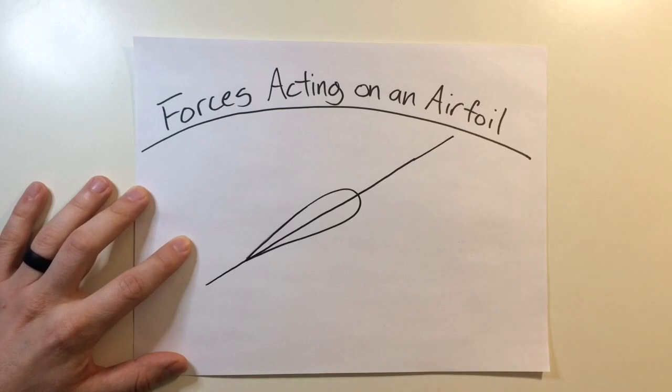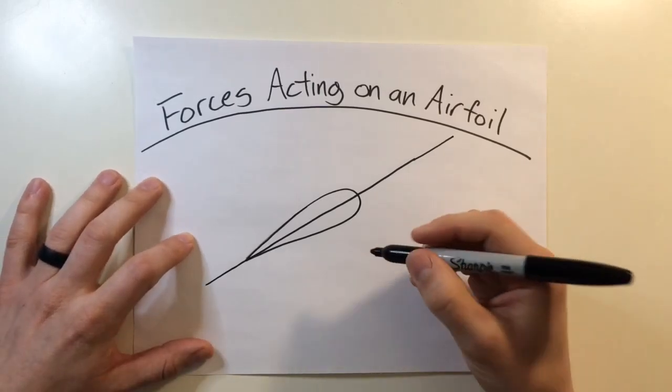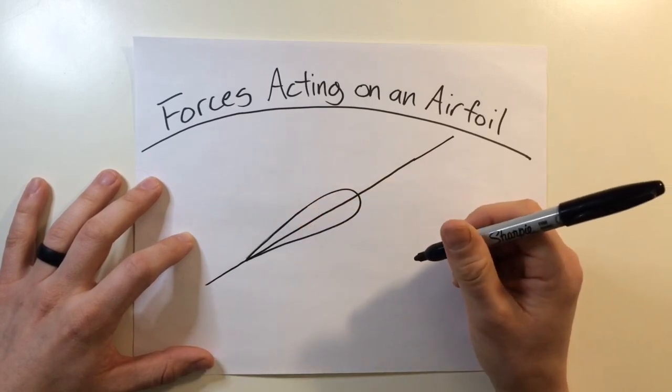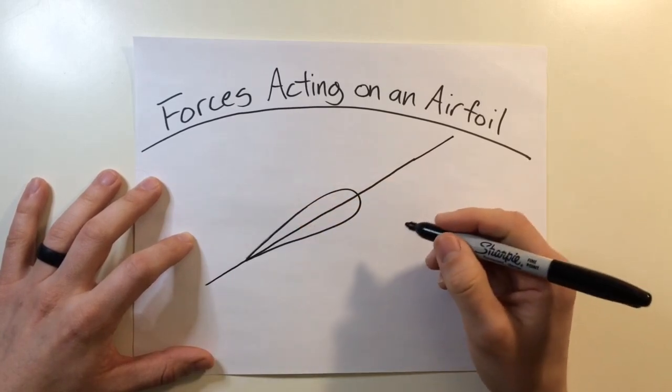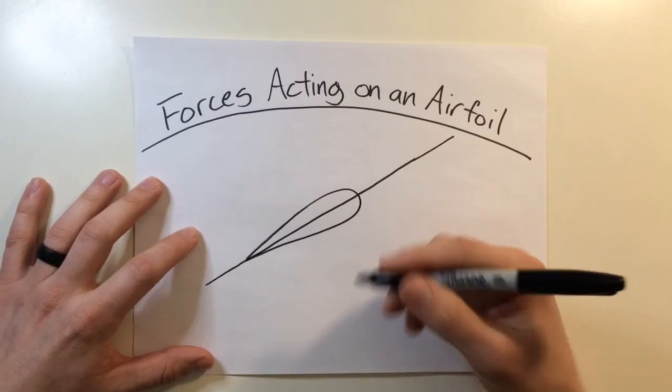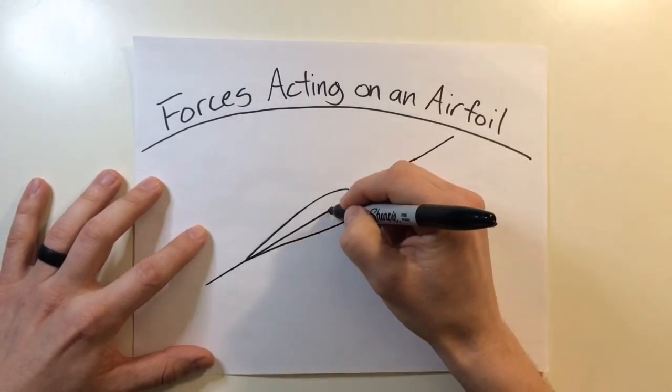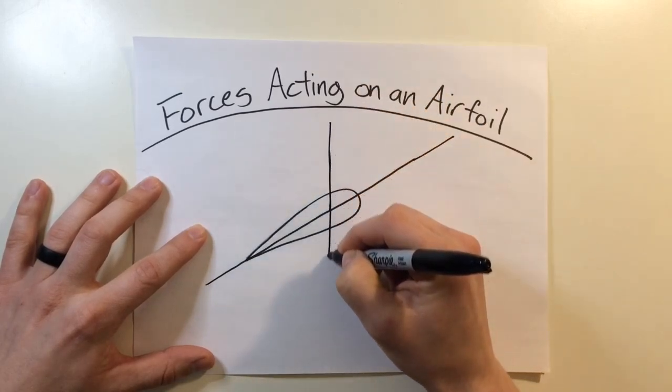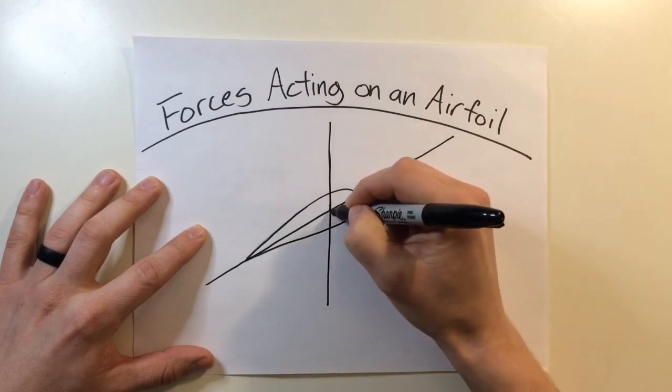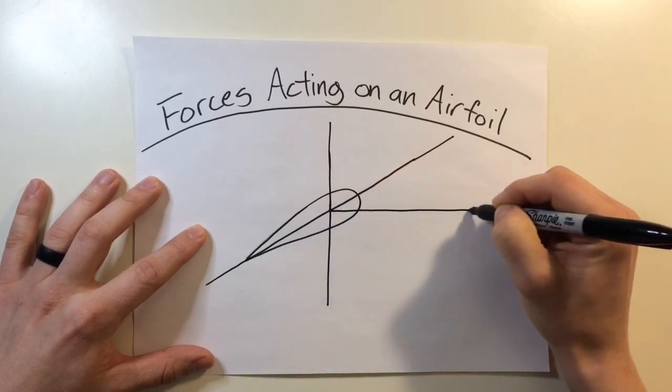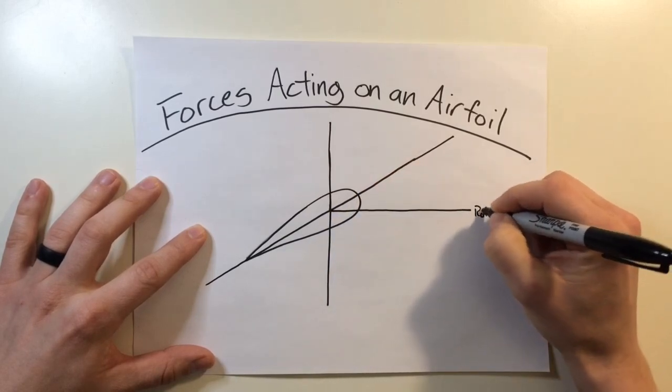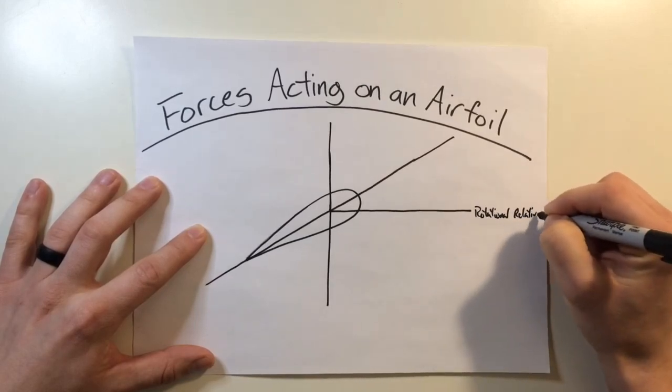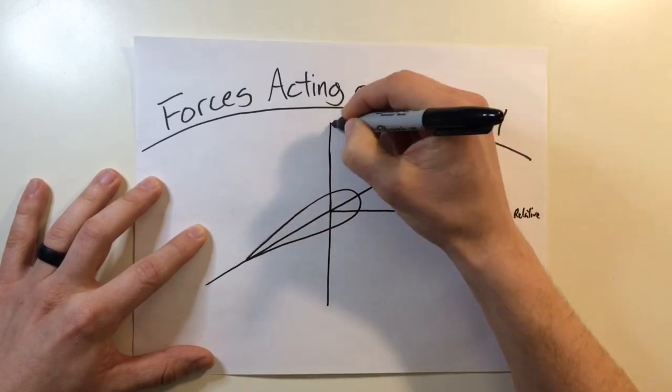This cord line is going to give us our baseline for how to measure a lot of the other forces in relation to the blade. Now as the rotor turns around the mast it creates a rotational relative wind. This is generally perpendicular to the axis of rotation when the aircraft is level. So what we have right here is the axis of rotation, and it's going to be impacting our rotational relative wind.